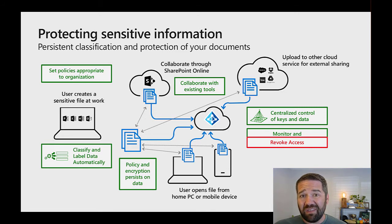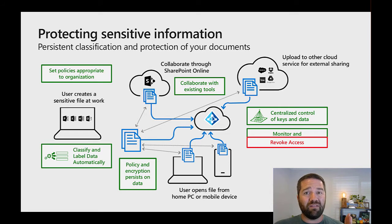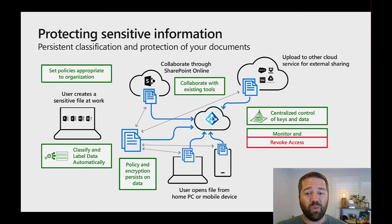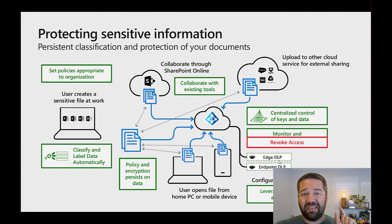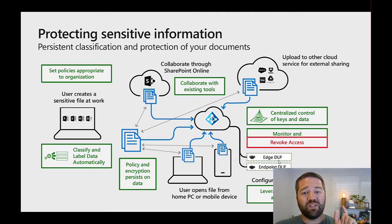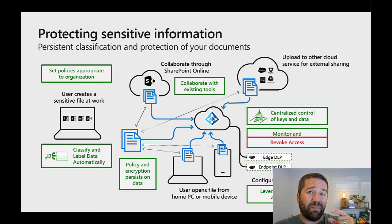At any time with the document, you can monitor who has accessed it — we're going to get a log of every person that's opened this document. And if we need to, we can always revoke access. Then there's the DLP functionality: that metadata label is outside of the encryption, so we can trigger endpoint DLP based on the metadata.